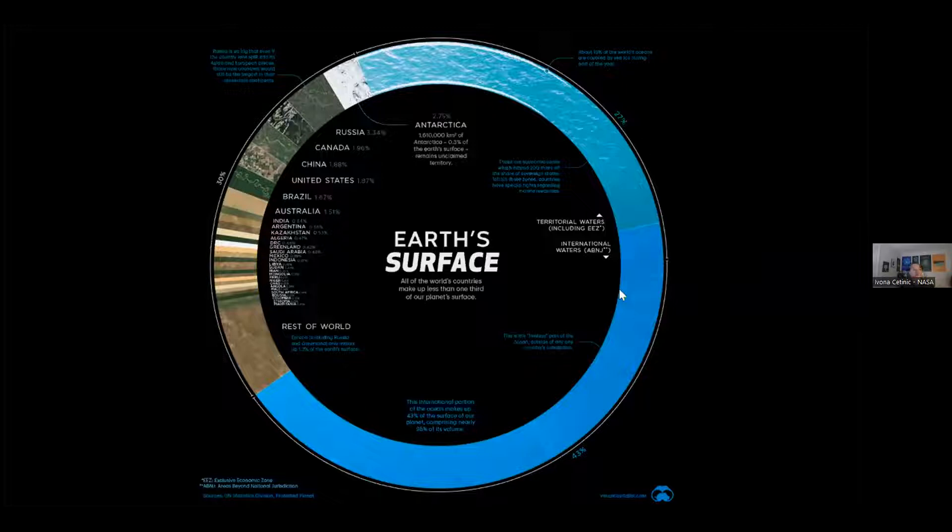But being like human, living on land, we really have a hard time visualizing how much is that 71%. It's hard. We don't live there. And I really like this visualization because it's a circle. And you can see that the teeny tiny portion that we live in is so dwarfed by the immensity of the ocean.